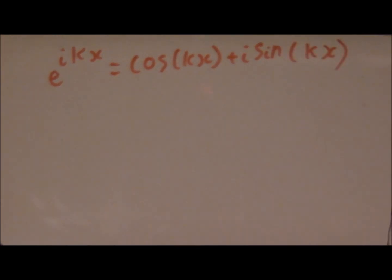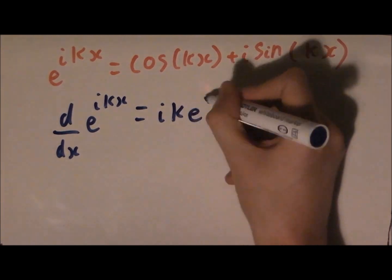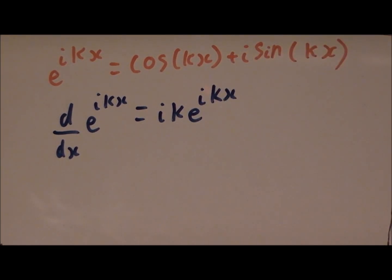The reason we write the wave equation as this is because of this nice property of e, which means that if you differentiate it, you get the same thing, multiplied by the differential of the argument, this bit, like so.